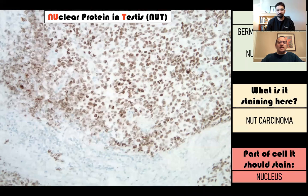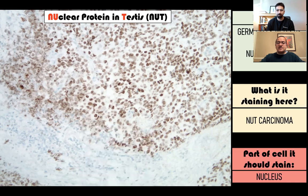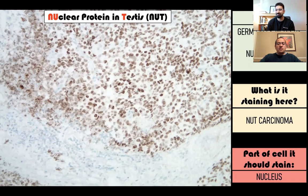Let's move to another nuclear marker - nuclear protein in testis, or NUT, which we just talked about. That's why you get the name NUT carcinoma. It stains normal germ cells in the testis. In this photo it stains NUT carcinoma, a very aggressive carcinoma in the thorax and other sites. This particular clone C52B1 is very specific for NUT carcinoma. Unfortunately, not very many labs have it so far, but as this becomes a more well-known entity, people will start buying the antibody.